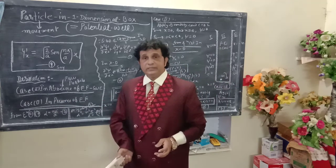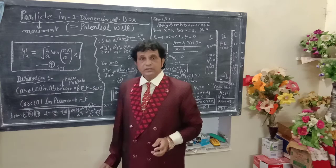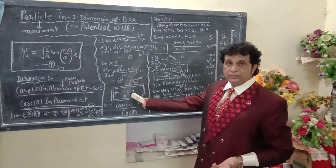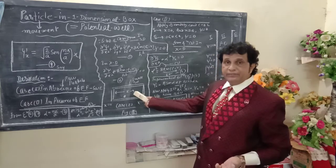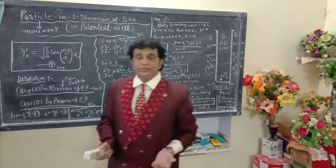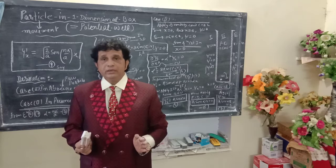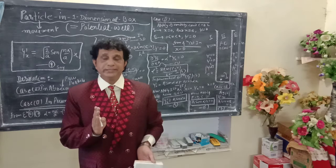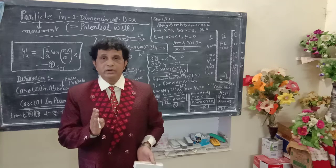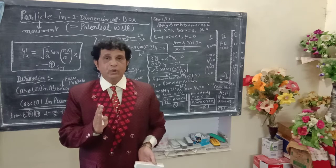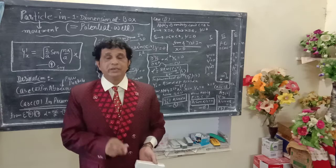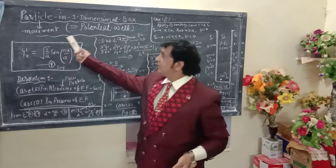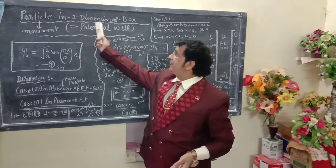In these two different cases — Case 1 and Case 2 — Case 1 is absence of electric field (free particle), and Case 2 is presence of electric field. When we solve the Schrödinger wave equation in both cases with respect to psi, it gives the exact meaning of particle in a one-dimensional box.